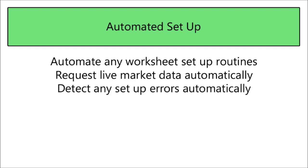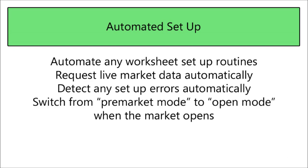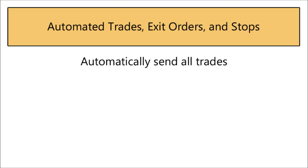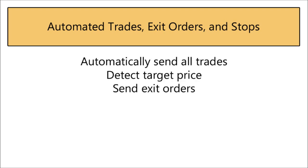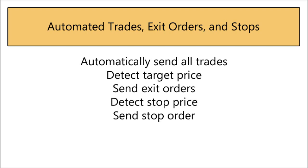We want to automate any worksheet setup routines, request live market data automatically, and detect any setup errors automatically. When the market opens — exactly 8:30 in my time zone — we switch the system from pre-market mode to open mode. When the market is open, we automatically send trades, detect the target price and send exit orders, and look for our stop price to send stop orders.